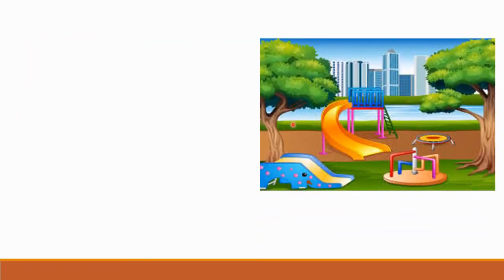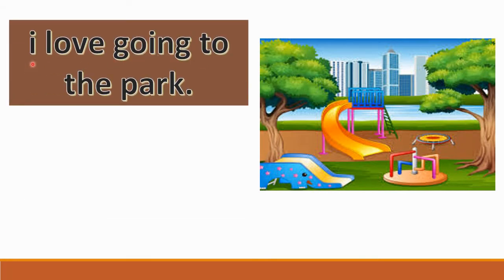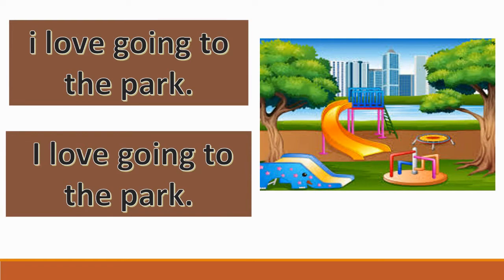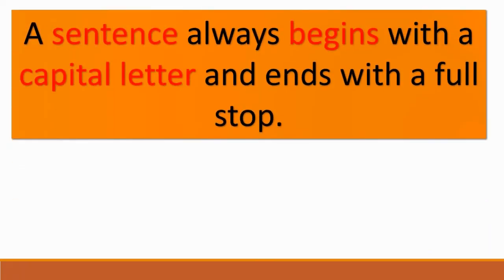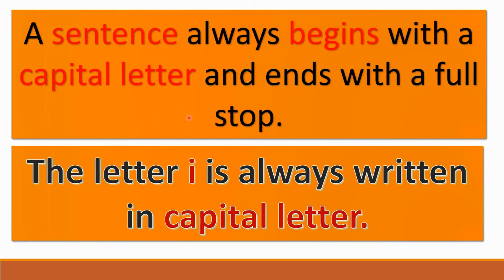What can you see in this picture? This is a park. 'I love going to the park.' In this sentence, I will come in capital letter. Now we have seen two rules. First: a sentence always begins with a capital letter and ends with a full stop — meaning the initial letter of the first word will come in capital letter. Second rule: the letter I is always written in capital letter.